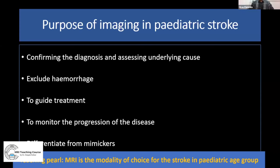The purpose of imaging in pediatric stroke is first to confirm the diagnosis and assess any underlying cause, exclude hemorrhage, guide treatment, monitor disease progression, and differentiate mimics from true pediatric stroke. Since the child brain is immature and not properly developed in children less than two years, MRI should be the modality of choice instead of CT — that is the key take-home message.